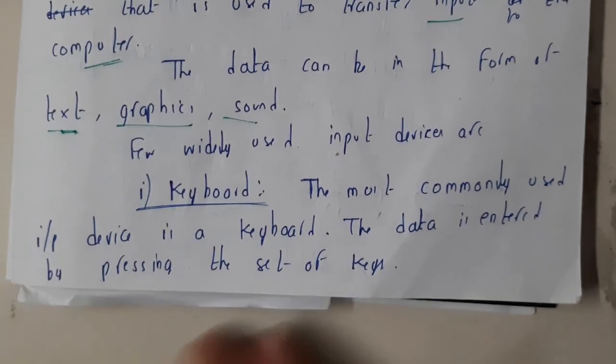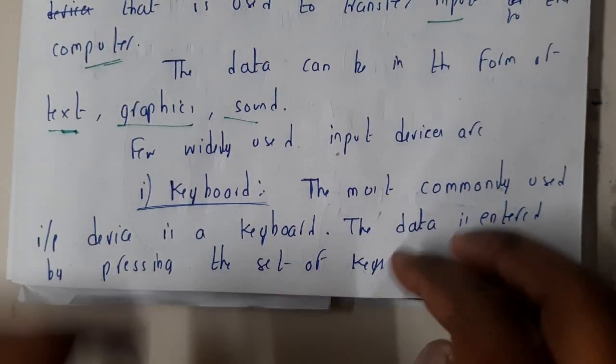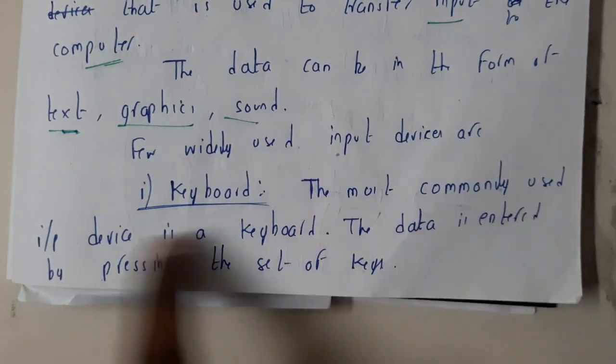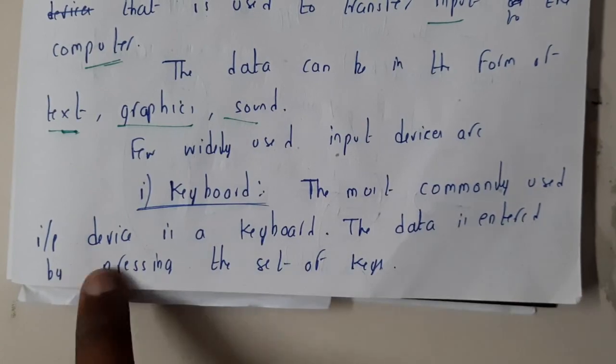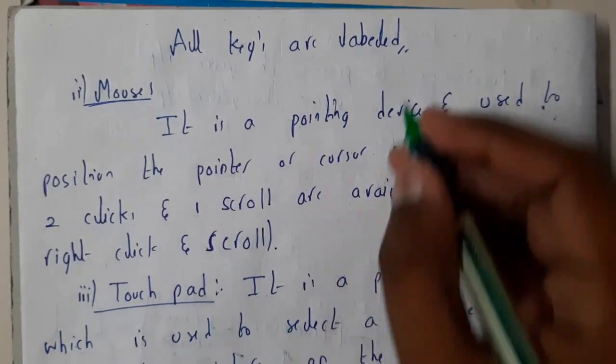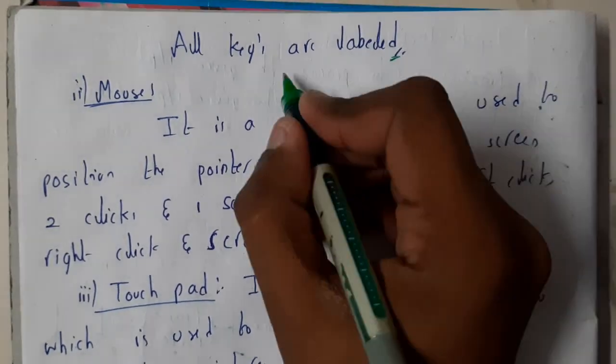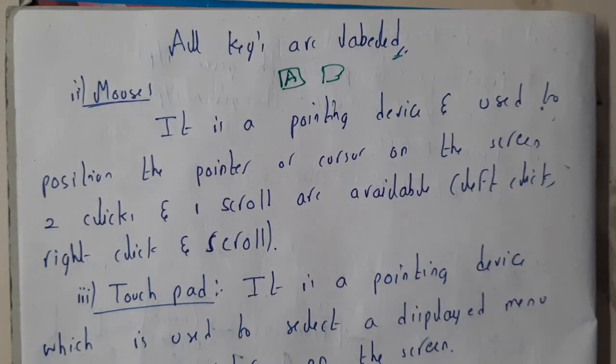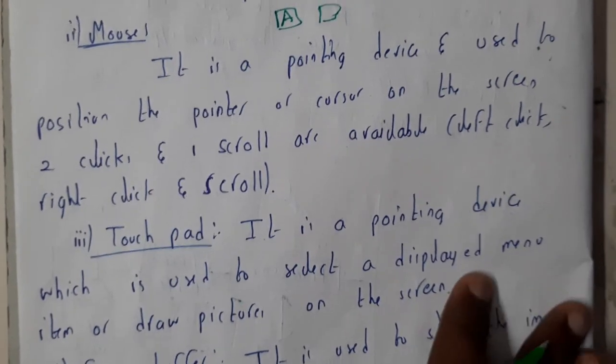Keyboard is nothing but in which you will be having different keys. You will be typing the characters. The most commonly used input device, the data is entered by pressing the set of keys. All keys are labeled, so I hope everyone knows that on each key you will be having A, B, C, D like that. That is the reason why I have just written the small point: they are labeled.